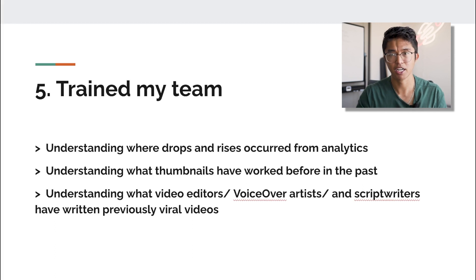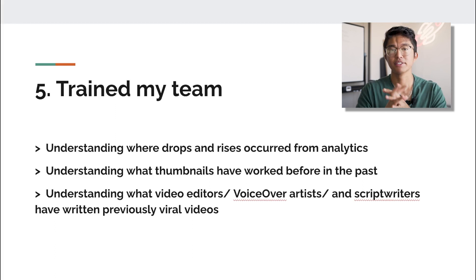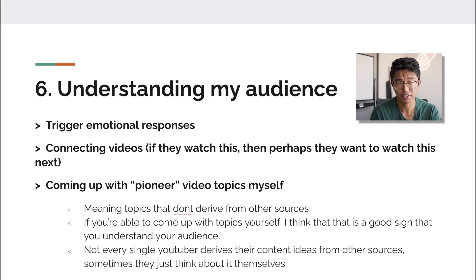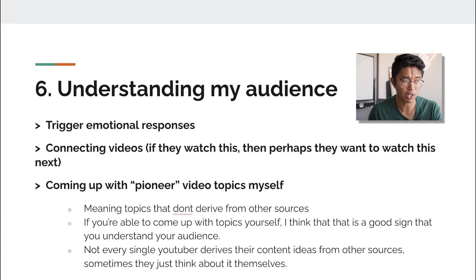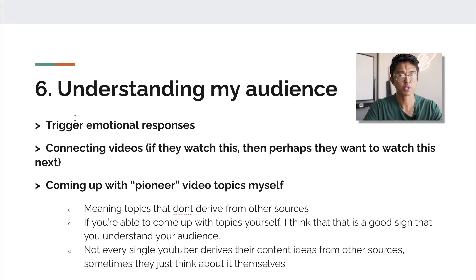Training my team, vetting my team, and making adjustments based on analytics — that's all led to helping me make money from YouTube ads. The sixth thing that's helped me is understanding my audience. As cliche as it sounds, you want to go into a niche you know more than the average person about, because if you know your niche well enough you can trigger emotional responses based on the titles and thumbnails you create.